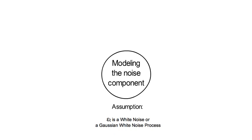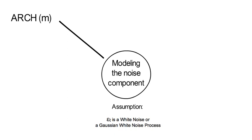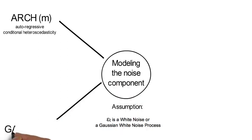As the volatility of epsilon t tends to cluster in financial data, we learn to model epsilon t with the ARCH(m) framework. That stands for autoregressive conditional heteroscedasticity. We also generalize that to GARCH(m,s) models, the so-called generalized ARCH models.